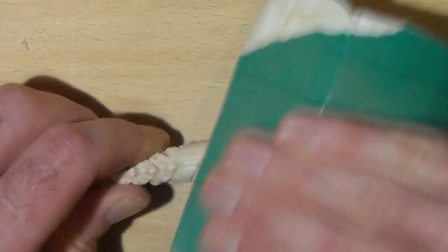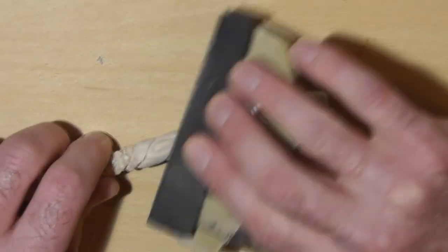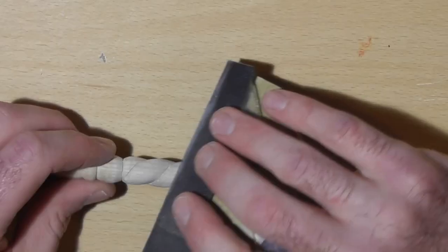I then went back over the entire wand—or mainly the handle, but the entire wand—with 120, then 240, and then 320 grit sandpaper to really get it down to a nice fine smooth feeling.